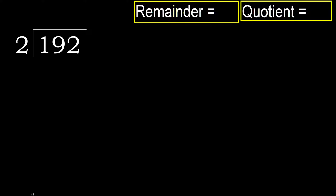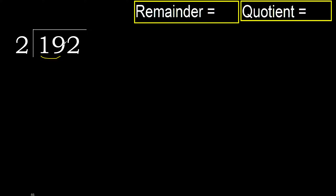192 divided by 2. 1 is less, therefore next. 19 is not less, therefore work with 19.